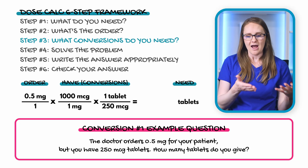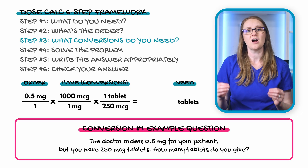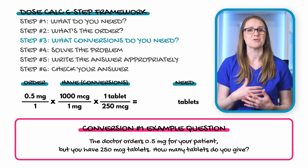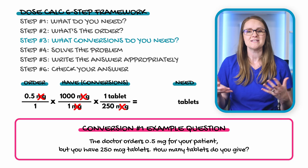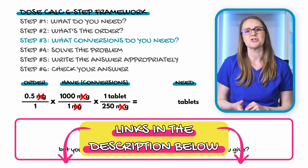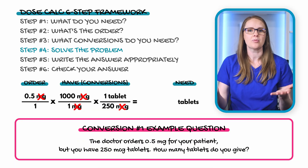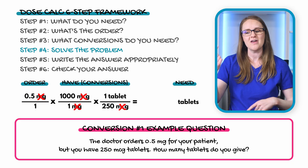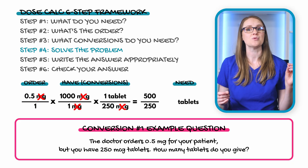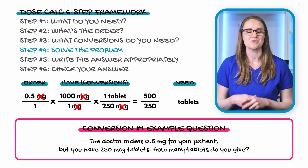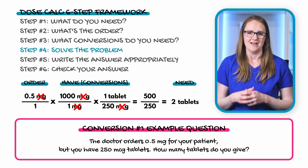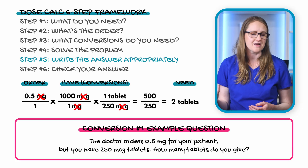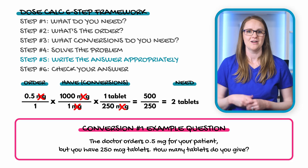When writing out conversions, make sure units cancel so you're only left with tablets at the end. Milligrams needs to cancel out and micrograms needs to cancel out. Step four: multiply across the top, multiply across the bottom, then divide. 0.5 × 1 × 1,000 = 500; 250 × 1 = 250; 500 ÷ 250 = 2. Step five: the answer is 2 tablets — a whole number, so no rounding needed.